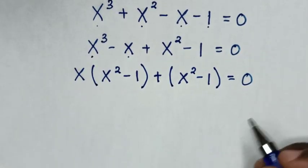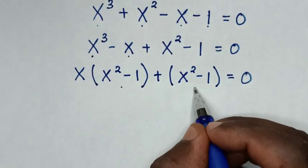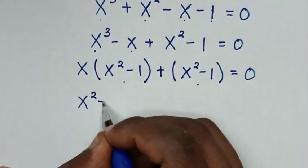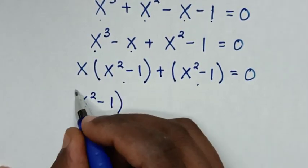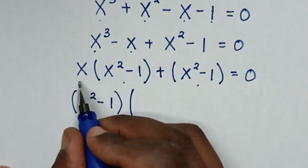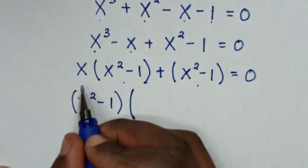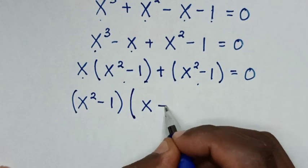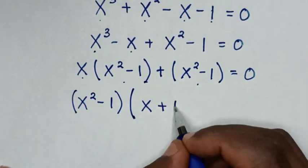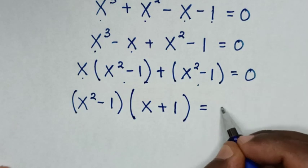Then in the next step, (x² - 1) is common, so we take (x² - 1) out of the bracket. Dividing through gives us (x² - 1)(x + 1) = 0.